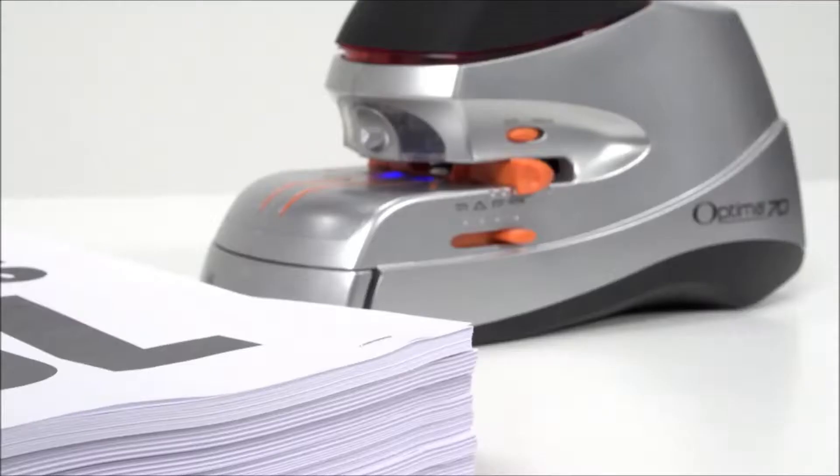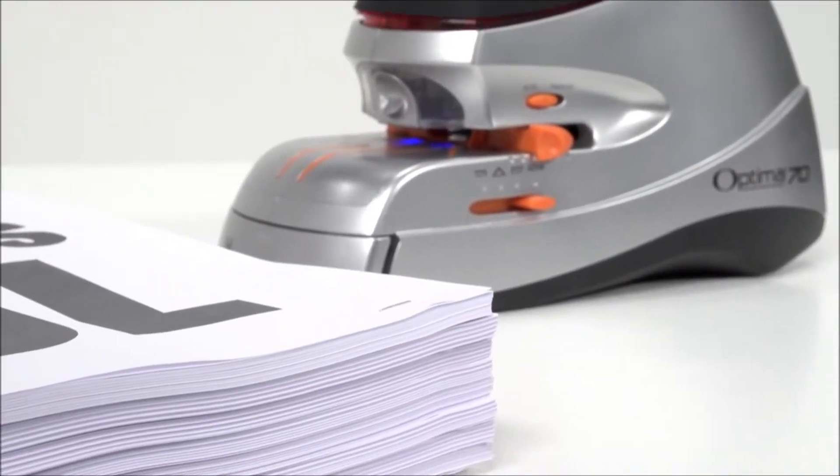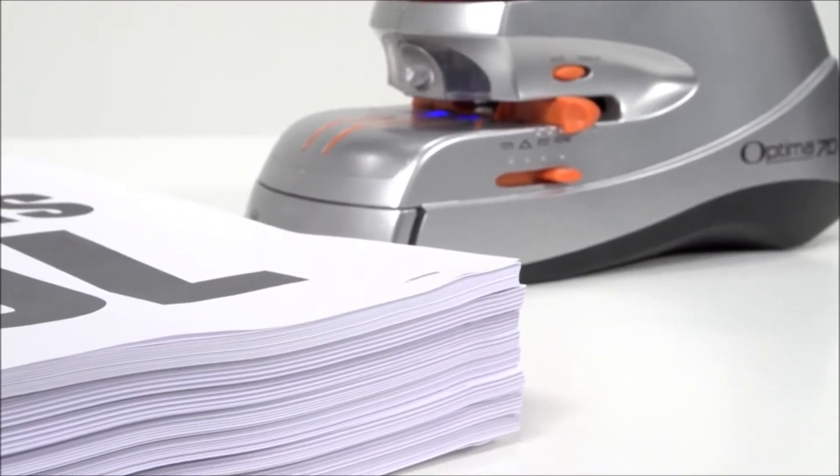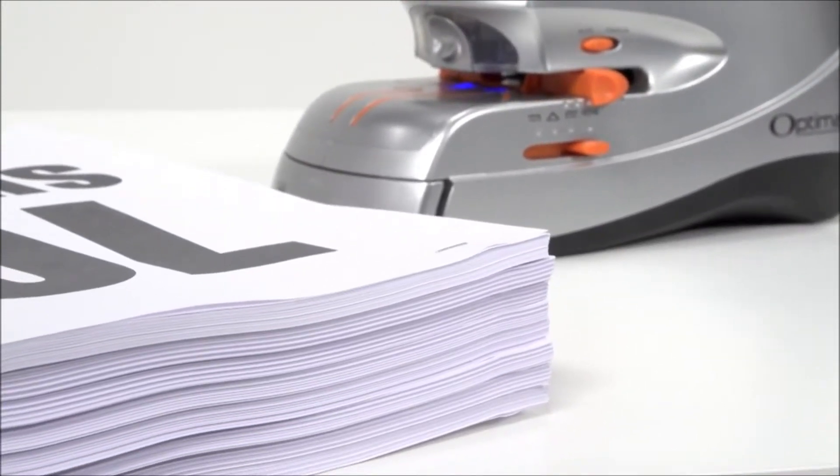The Swingline Optima 70 Sheet Electric Stapler keeps documents neat and organized. A flat clench anvil forms the staple flat to the back of the document, allowing documents to be stacked neatly.